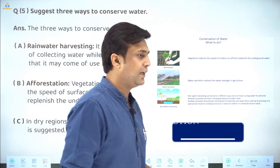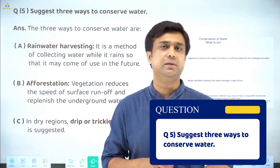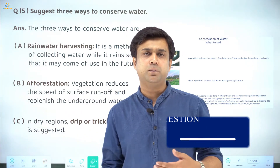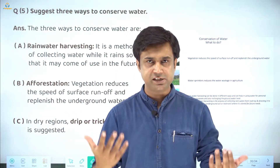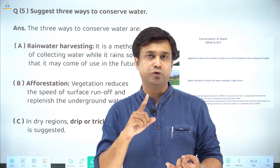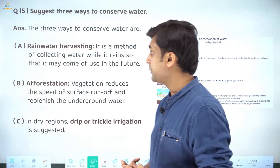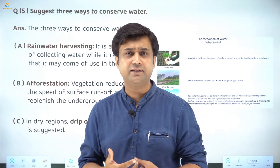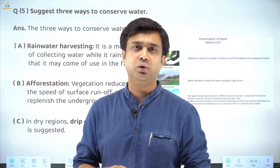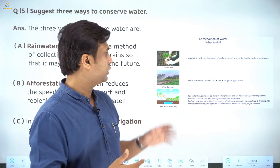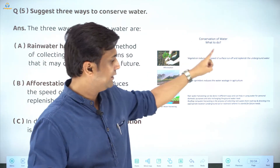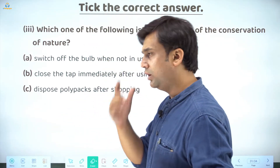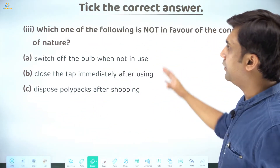Now, name any three ways to conserve water. Stop doing harmful things and think of new solutions. We studied afforestation, rooftop rainwater harvesting, and in dry areas, using sprinkle irrigation or drip irrigation. These are the key methods. The slide is shown here just as a visual reminder.